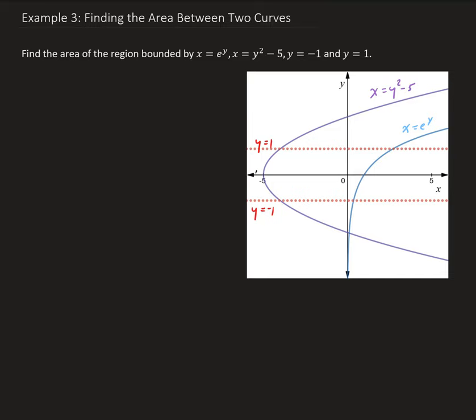In this example, we want to find the area of the region bounded by x equals e to the y, x equals y squared minus 5, and the region bounded between y equals negative 1 and y equals 1.